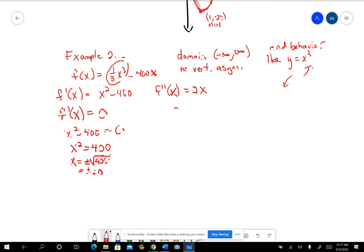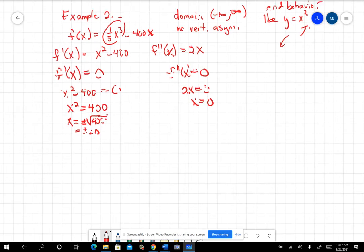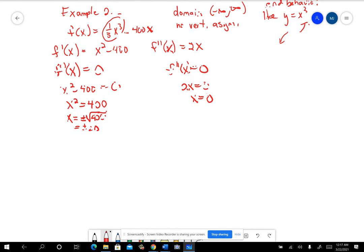It's plus or minus 20. And then I'm going to do f double prime of x equals zero. That happens when 2x equals zero, which means x would equal zero. Alright, so that's the possible inflection point. So positive or negative 20, possible maxes or mins, zero is a possible inflection point.